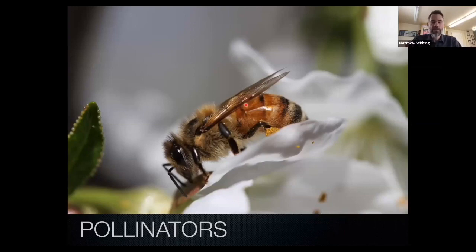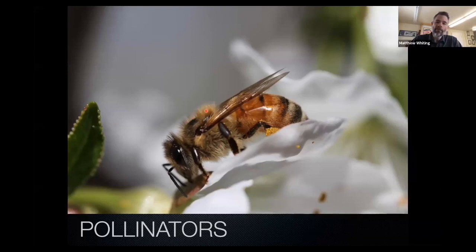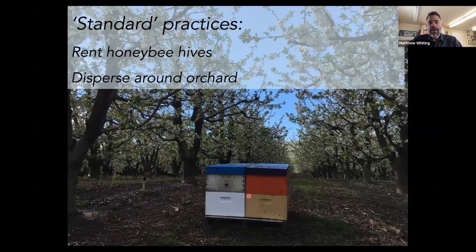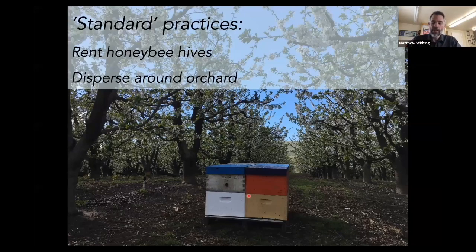Now let's look at the other side — pollinators. This is Apis mellifera, the European Italian honeybee, an introduced species to North America, visiting a cherry flower. You can see pollen stored on the rear legs, and the fine body hairs are typically covered with pollen as well. Standard practice involves renting honeybee hives and dispersing them around or throughout the orchard, sometimes placed around the perimeter.